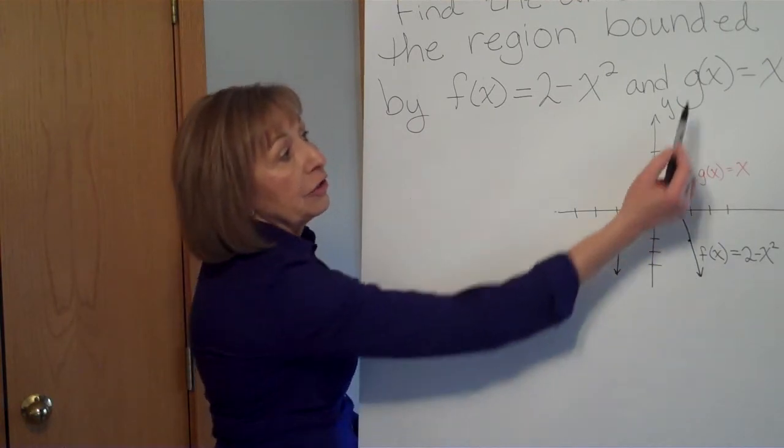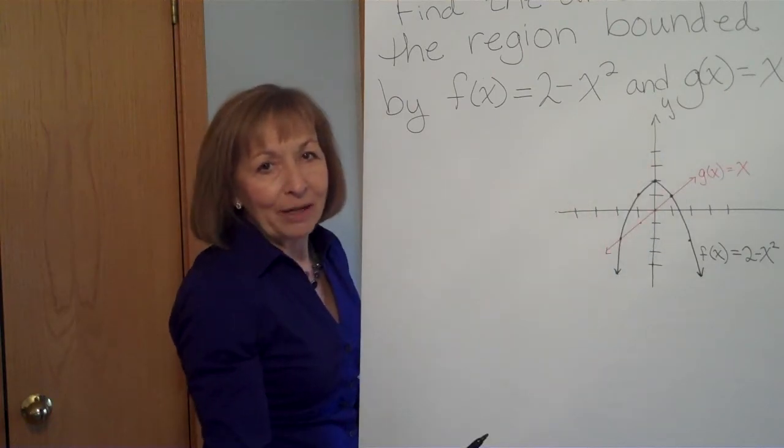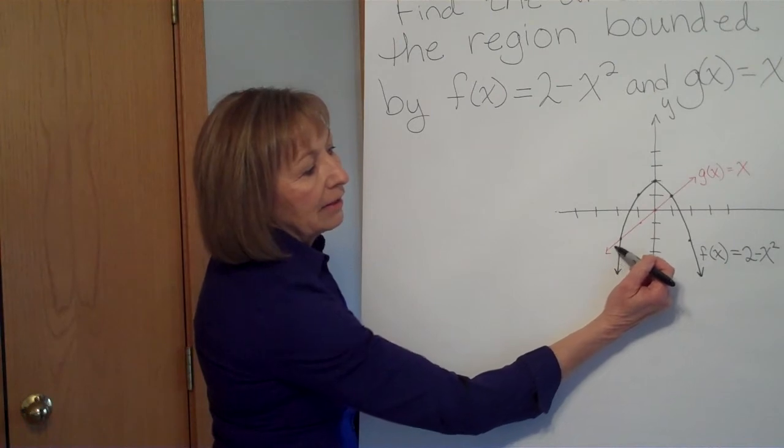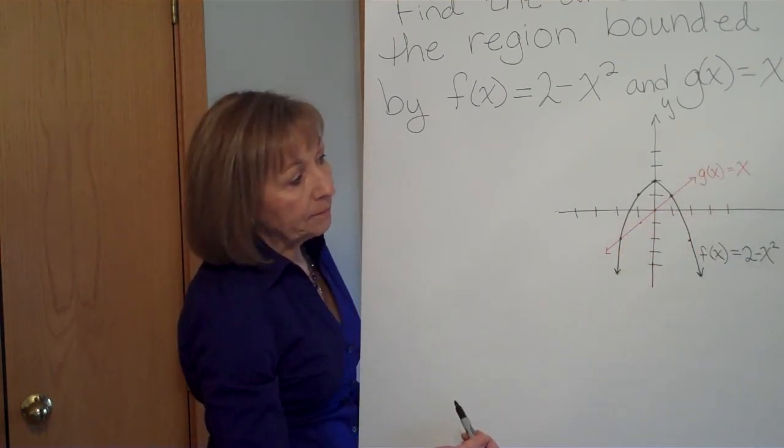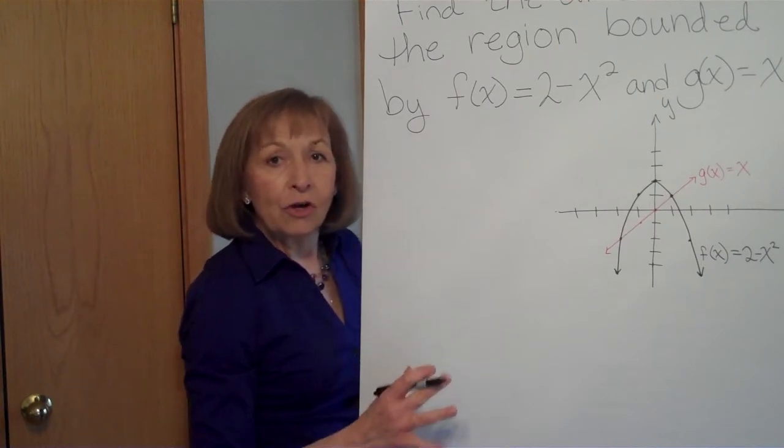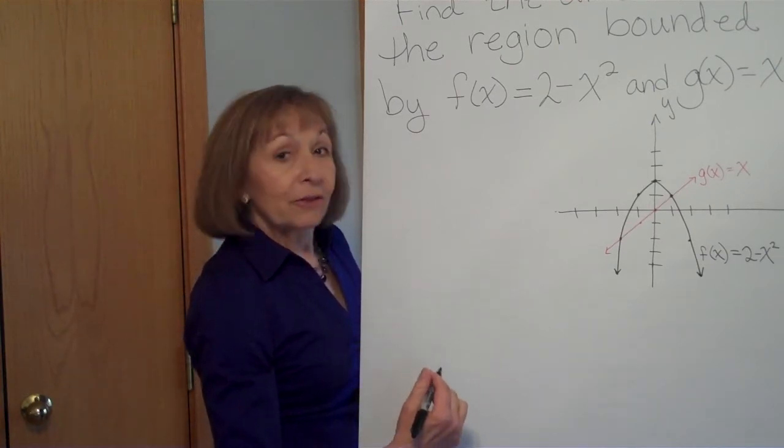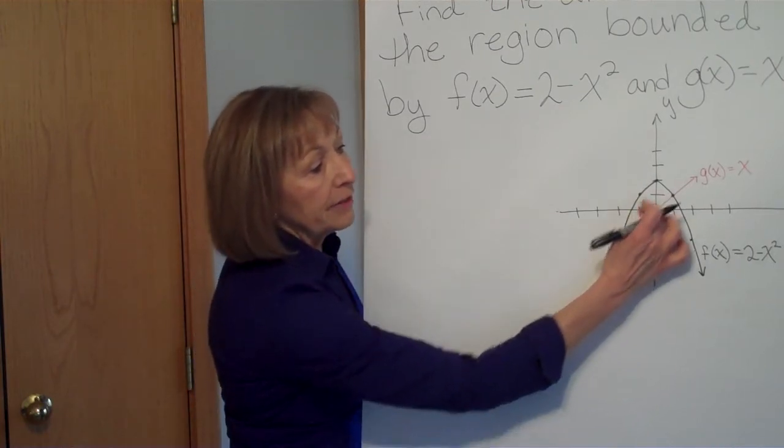Now the other function, g of x is equal to x. Remember, g of x is just another name for y, so that's just like y equals x. So that's just the line going through the origin with a slope of 1. Now here, there's no interval that's given to you. So the region that they're talking about here is the region that's caught between the curves that's enclosed.